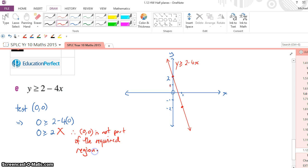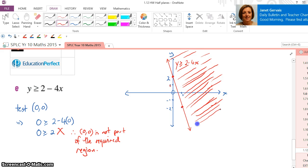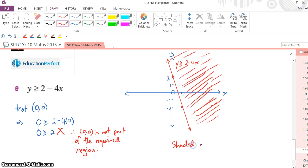So if it's not part of the required region, then we simply indicate the other region that is required by shading. And the convention is to shade the region you're looking for, but it's always good to make a note. So, shaded area indicates the required region.